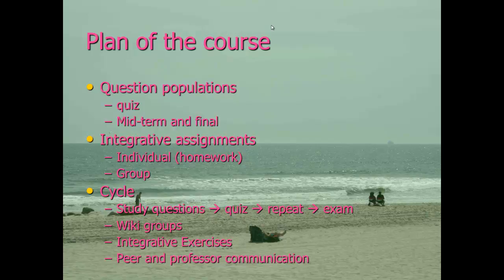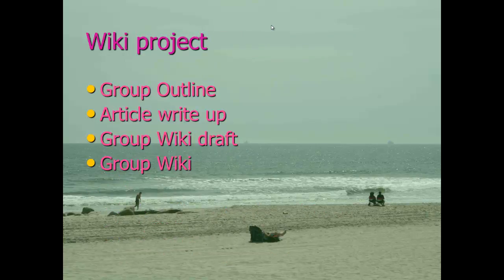During the semester you'll be working with peers online to develop this process. There will be four stages of the wiki project. The first will be a group outline where as a group you develop an outline of potential articles you're going to use in your research wiki. After I look at the outline and approve it or give you feedback, the next step is to get the research articles and write up a paragraph or two description of each one. Once I give you feedback on those articles, you'll do a draft of the group wiki, I'll give you feedback, and then you have the final group wiki for your final grade.